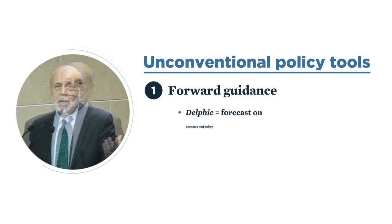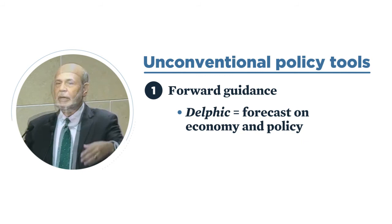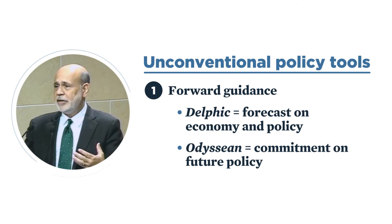Beginning with forward guidance: Delphic forward guidance is basically a forecast — here's what the central bank thinks is going to happen. Think about the Fed's dots. The idea of Odyssean guidance is to make a commitment, or near-commitment, which may be contingent, about what policy will be in the future.